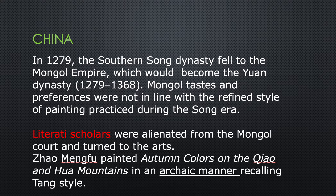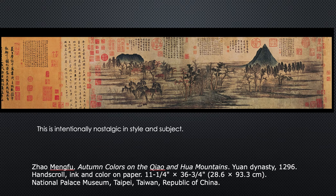In 1279, the Southern Song Dynasty fell to the Mongol Empire — don't confuse that with the Mughal Empire. The Mongols, coming from Mongolia, established what would become the Yuan Dynasty. The Mongol tastes and preferences were not in line with the refined style of painting practiced during the Song era; they had no use for those subtleties whatsoever. So literati scholars were alienated from the Mongol court and turned to the arts. The literati were the people who liked, made, and appreciated those subtleties — and they lost their main stream of income, which was the court.